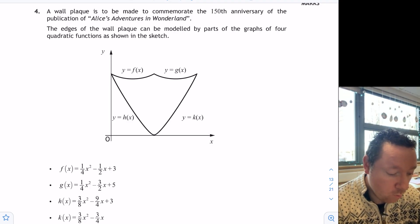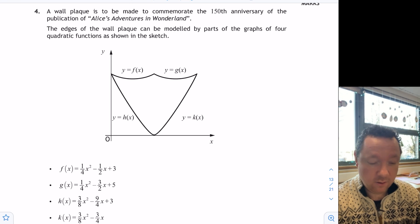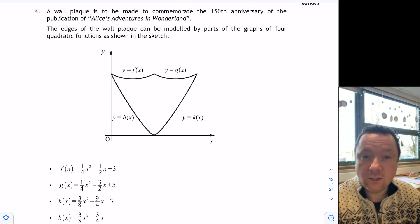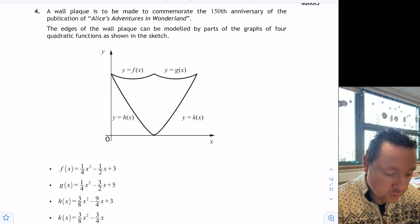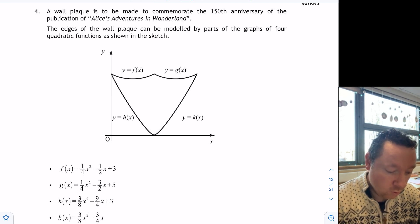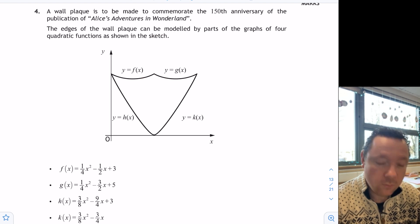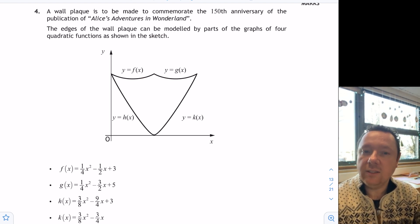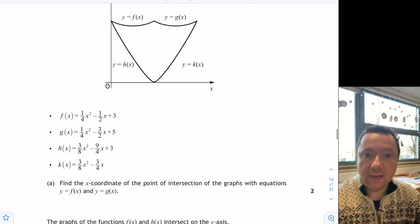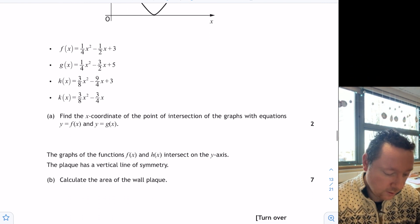Okay, this one was about a wall plaque made to commemorate the 150th anniversary of the publication of Alice in Wonderland. The edges of a wall plaque are modelled by quadratic functions and it gives you four bullet point equations. So what makes this one difficult is it will give you all these equations, all this information, but you just need to keep your head.